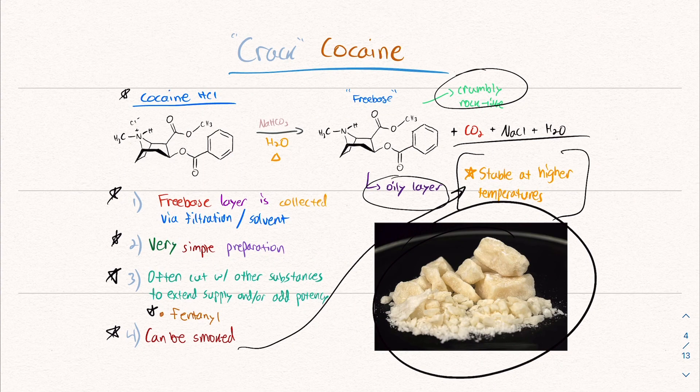And then we talked about crack cocaine, how you take cocaine hydrochloride and a base. And I want to mention real quick, the solubility in water is important because the cocaine will dissolve in water and that allows for the chemistry to turn it into its base form. And now it can be smoked because it is more stable at higher temperatures. And it's also often cut with other substances.